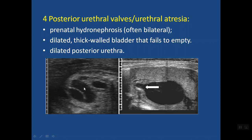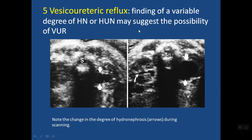If you see dilation of the ureter, pelvis, and major calyces, you suspect obstruction in the lower urinary tract. If the bladder is normal, there is obstruction at the vesicoureteric junction — a vesicoureteric junction obstruction — where you see ureteral dilation with the pelvis.